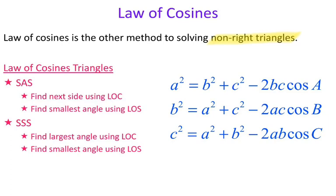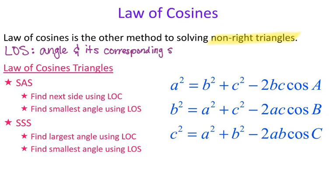We've already talked about law of sines, but one thing I do want to reiterate is that with law of sines, you have to have an angle and its corresponding side. In order to use law of sines, you absolutely have to have an angle and its corresponding side — A and a, B and b, C and c. Now if you don't have that information and you're unable to find it, chances are you're going to be using law of cosines.